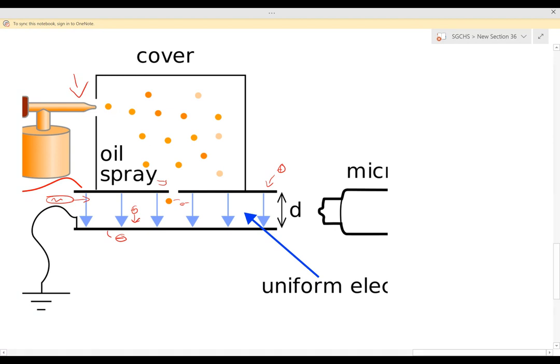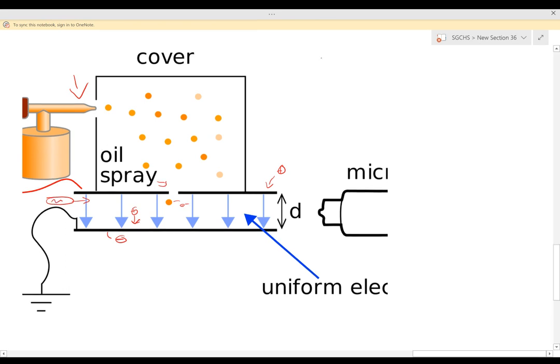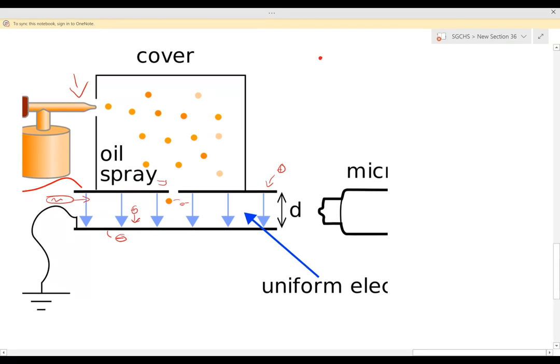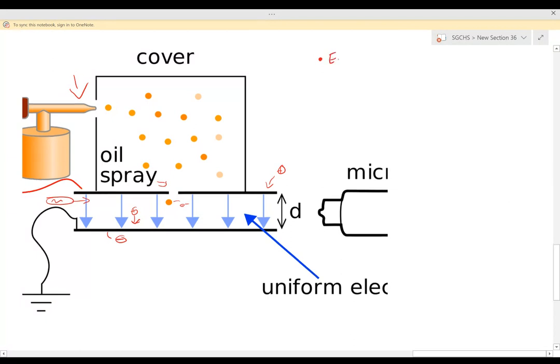This is where Millikan started doing his equations. What he knew and understood was each oil drop was a different size. So each oil drop was a different size. What I mean by that is volume and mass were different.